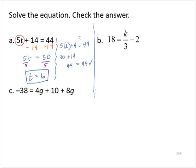Exercise B. 18 is equal to k over 3 subtract 2. We identify the variable term, k over 3. Let's remove any other terms from that side of the equation. I will add 2 to both sides of the equation.